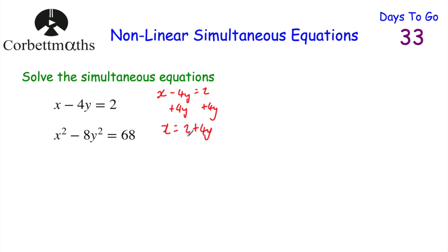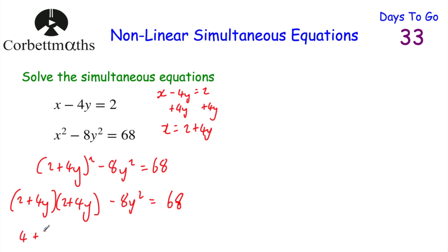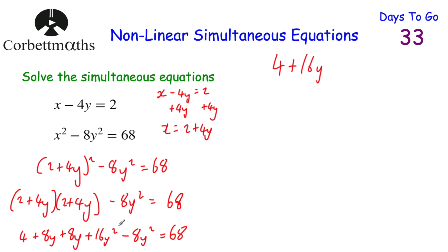Whenever you square a bracket you multiply it by itself, so we have (2 plus 4y)(2 plus 4y) minus 8y squared equals 68. Expanding: 2 times 2 is 4, 2 times 4y is plus 8y, 4y times 2 is plus 8y, and 4y times 4y is plus 16y squared. Then minus 8y squared equals 68. Simplifying: 4 plus 16y, plus 16y squared minus 8y squared is 8y squared, equals 68.